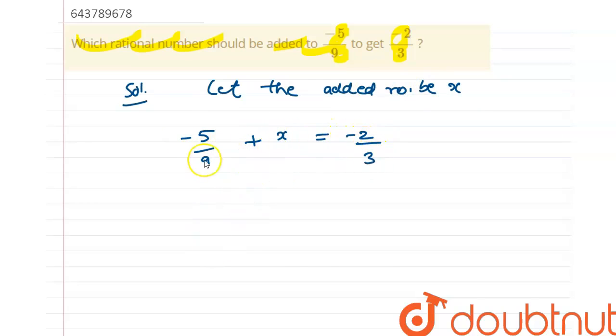Here we'll take minus five by nine towards the right side. It will give me minus two by three plus five by nine. Now the LCM of three and nine will be nine only.